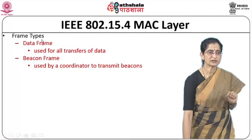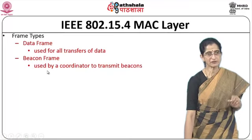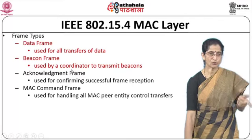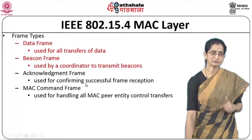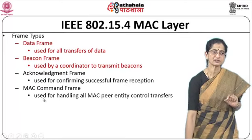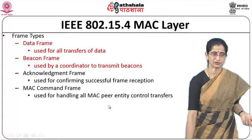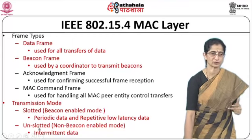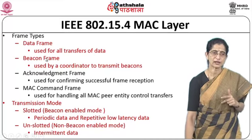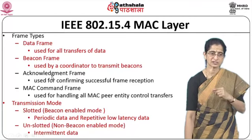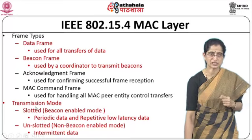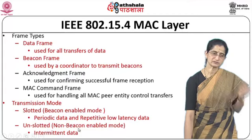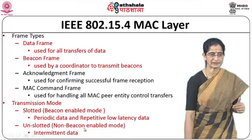Frame types in 802.15.4 include: a data frame for all data transfers; a beacon frame used by a coordinator to broadcast beacons so others will respond; an acknowledgement frame for confirming successful frame reception; and a MAC command frame for handling all MAC peer entity control transfers. Two transmission modes are supported: slotted mode in beacon-enabled mode where a coordinator sends beacons and provides slots for periodic and repetitive low-latency data, and unslotted mode — non-beacon-enabled — useful for sending intermittent data.